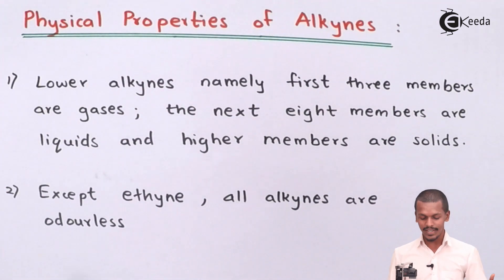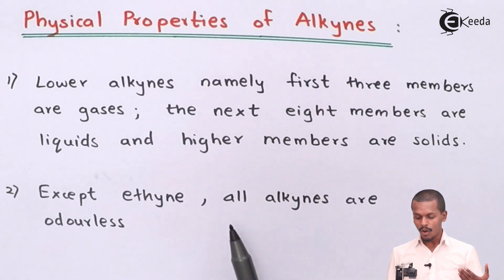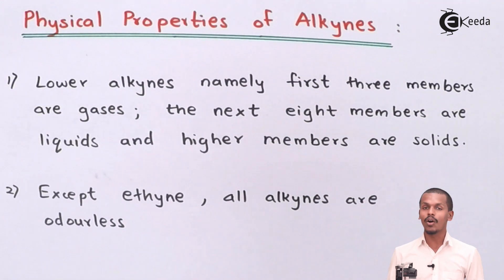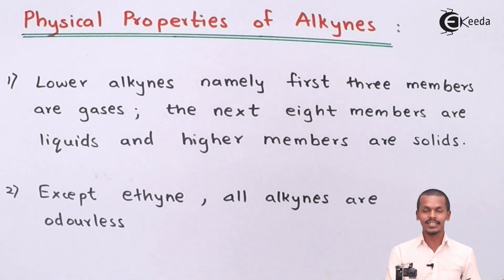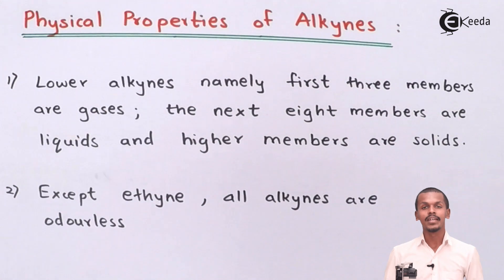Except for ethyne, all the alkynes are basically odorless. So they can be odorless gases, odorless liquids, or odorless solids depending on the member.